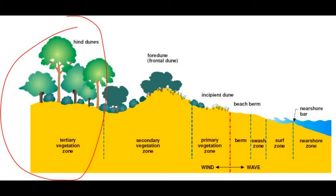Moving further inland again, the last area of the dune is called the hind dune, where you find the tertiary vegetation characterised by trees as well as an understory of shrubs. I've got another video — I can't guarantee the quality of this one, but try and enjoy it.